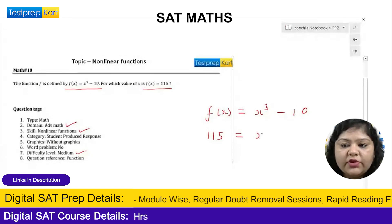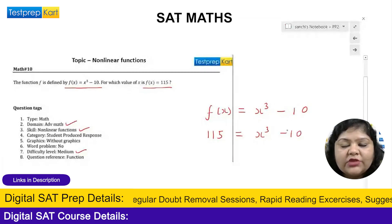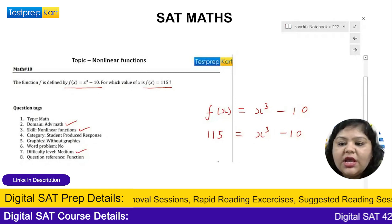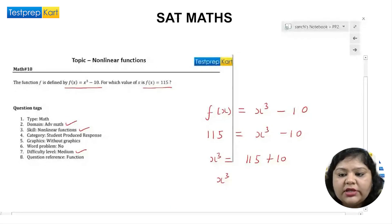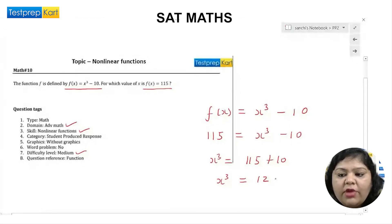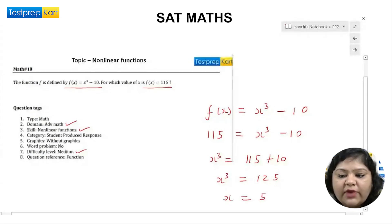x³ - 10 = 115. Just simplify this equation. I will have x³ = 115 + 10, so obviously I will have x³ = 125. If it is 125, surely my x value comes out as 5 because 125 is the cube of 5.